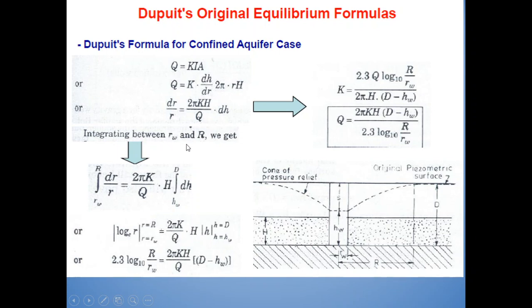Integrations will have the same limits, rw and R and hw. And here, instead of small d, it will be capital D. After integration and simplification, you will get the value of K is equal to 2.3Q log10(R/rw)/(2πH(D-hw)). Or rearranging the terms, you will get the value of discharge q as q is equal to 2πKH(D-hw)/(2.3 log10(R/rw)). So here also, if you know all other terms, you can find out the discharge or else you can find out the coefficient of permeability k.